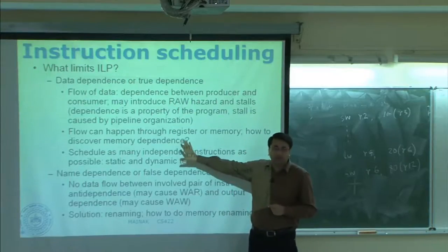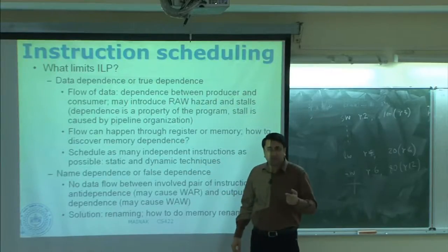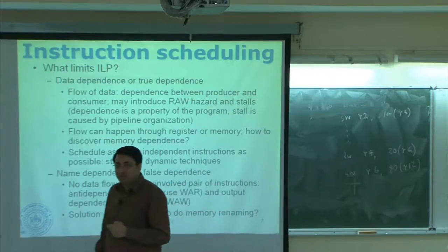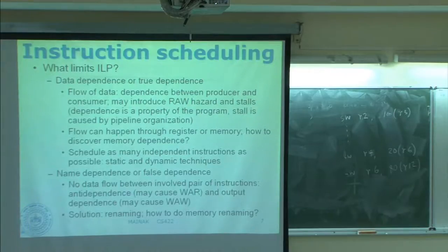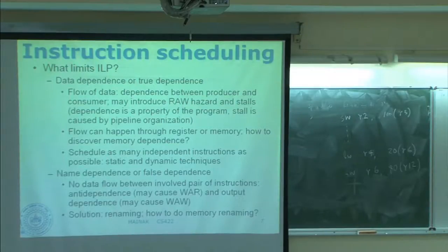This is often called the data flow limit of a processor. We will talk about techniques which actually try to go beyond that limit. The data flow limit is the reason why I could not issue this instruction in this cycle — the value would not be available on time, which is why I have to delay it by one cycle.